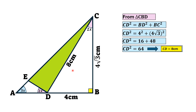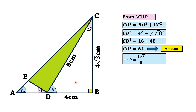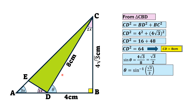Now let the angle at point D of this triangle be theta. Using sine of theta, we know that sin θ = opposite divided by hypotenuse. The opposite to theta is 4√3 and the hypotenuse of this right triangle is 8 cm. So sin θ = 4√3 over 8, which equals √3/2.